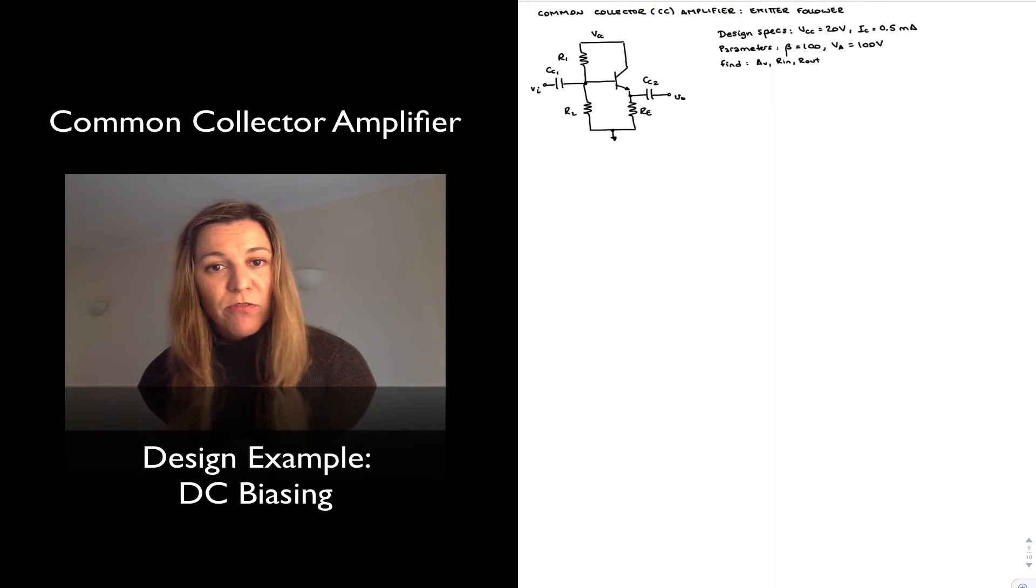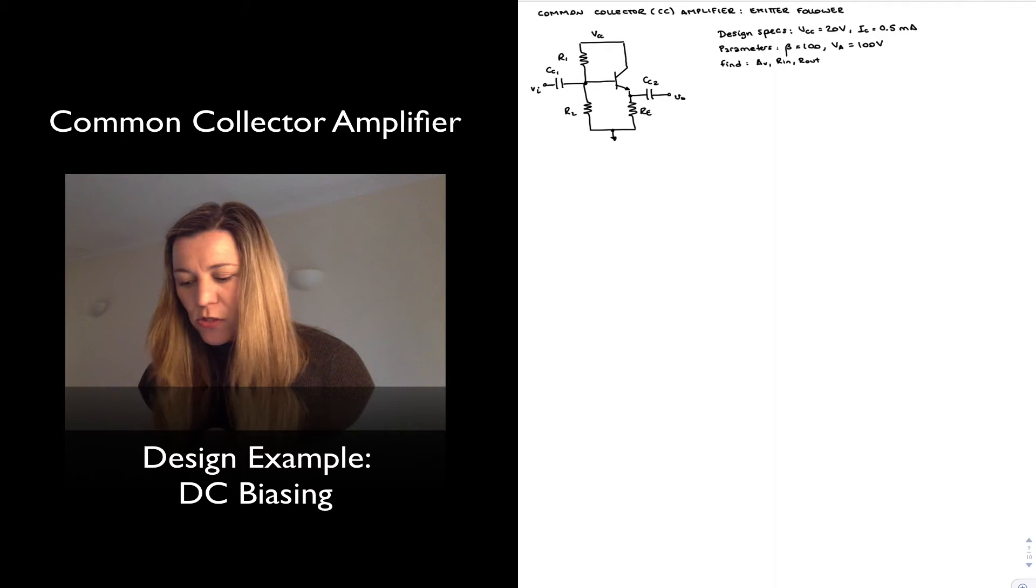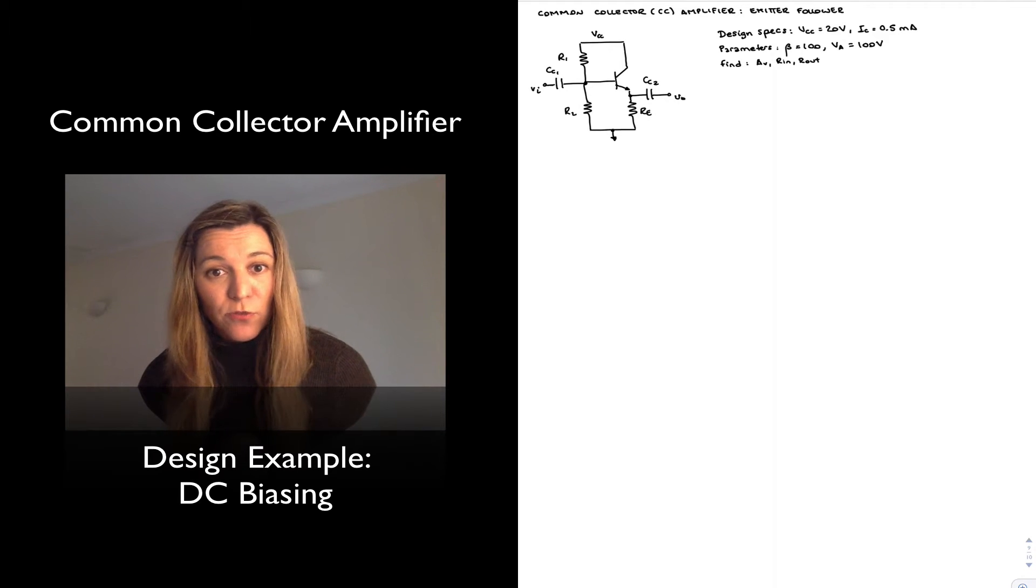I'm going to assume the following parameter values: a beta of 100 for the transistor and an early voltage of 100 volts—pretty typical values. I'm going to find expressions for the circuit small signal gain, input resistance, and output resistance.